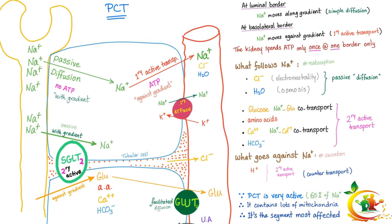Your proximal convoluted tubule is very active — it absorbs 65% of your sodium. It contains lots of mitochondria, of course, and it will be affected by tissue hypoxia because it is so metabolically active.